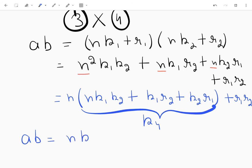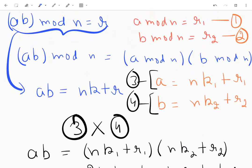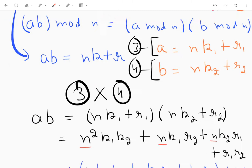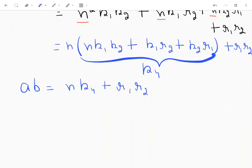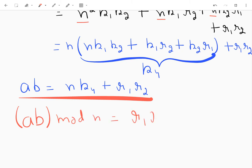So what I'll get here is ab equal to n times k4 plus r1 r2. And by my first equation, I already have ab mod n equal to r, and what I'm getting from here is now this means ab mod n is r1 r2.